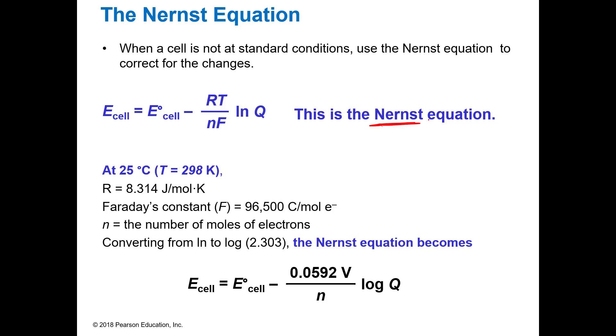It's a very famous equation. When it's not at standard conditions we use the Nernst equation for correction. There is a natural log version of this using Faraday's constant and things like that. Or we have a log version which is the one we're going to use because there's a little bit fewer things to have to put in there.